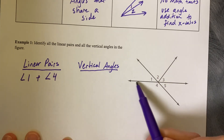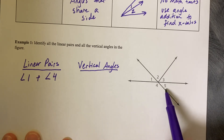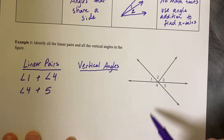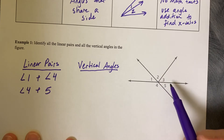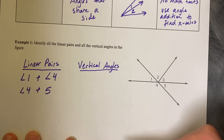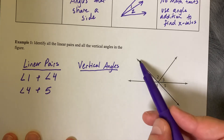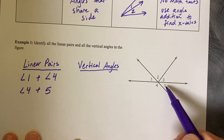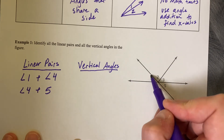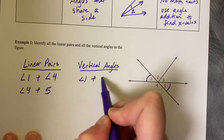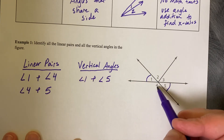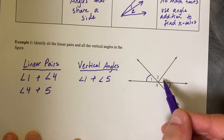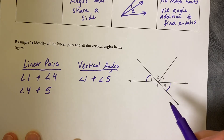Looking at the second line, it has angles four and five lying on it. You would not say that two, three, and five are a linear pair even though they lie on a line, but you can say two plus three plus five equals 180 degrees. For vertical angles, these two long lines intersect, and angles one and five are across from each other and the same size — angle one is congruent to angle five. You would not say angle four equals angle two and three individually, but four equals two plus three. You would not call that a vertical angle because there are two on one side.